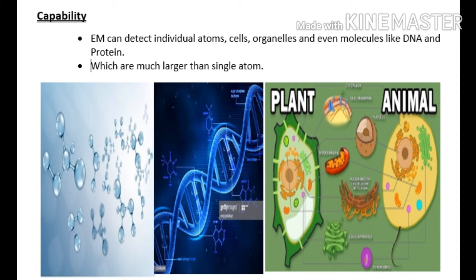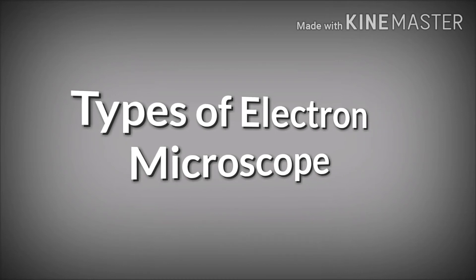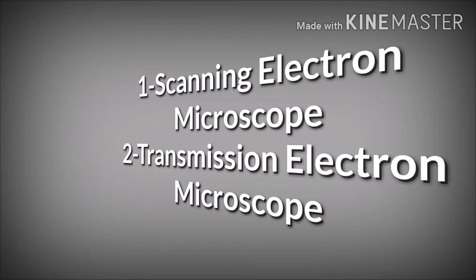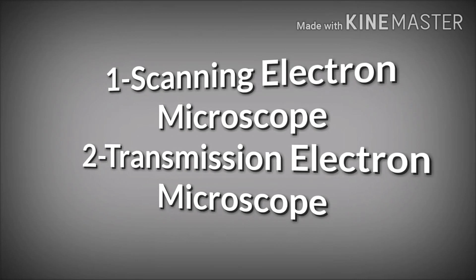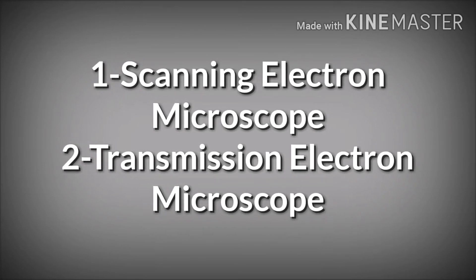Capability ke baad hum is ki types ki baat karenge. Types of electron microscope: there are two types. First one is Scanning Electron Microscope and second one is Transmission Electron Microscope. Scanning Electron Microscope ko hum SEM kehte hain aur Transmission Electron Microscope ko hum TEM kehte hain.